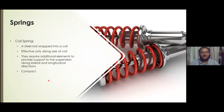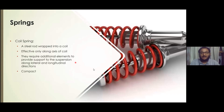These are the springs most of us imagine whenever we talk about a spring used in a vehicle or the whole suspension system — the coil spring. These are steel rods wrapped around a coil and are effective only along their axis, which is why they require additional elements to provide lateral and longitudinal support to the suspension. They are somewhat compact and require less space.